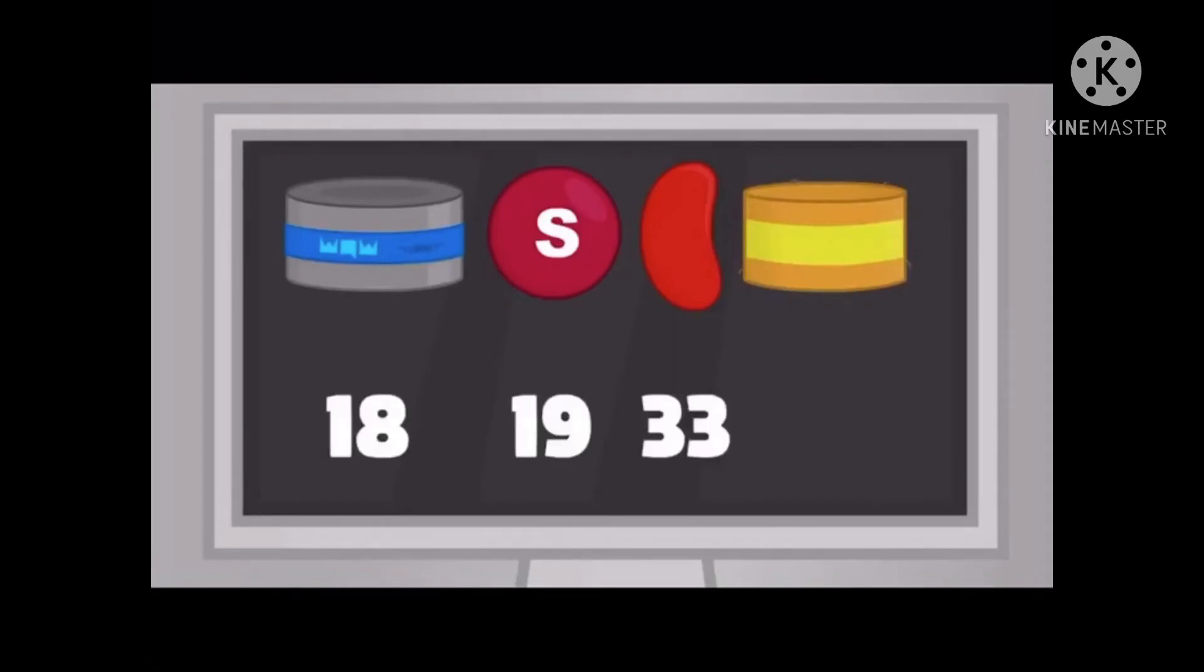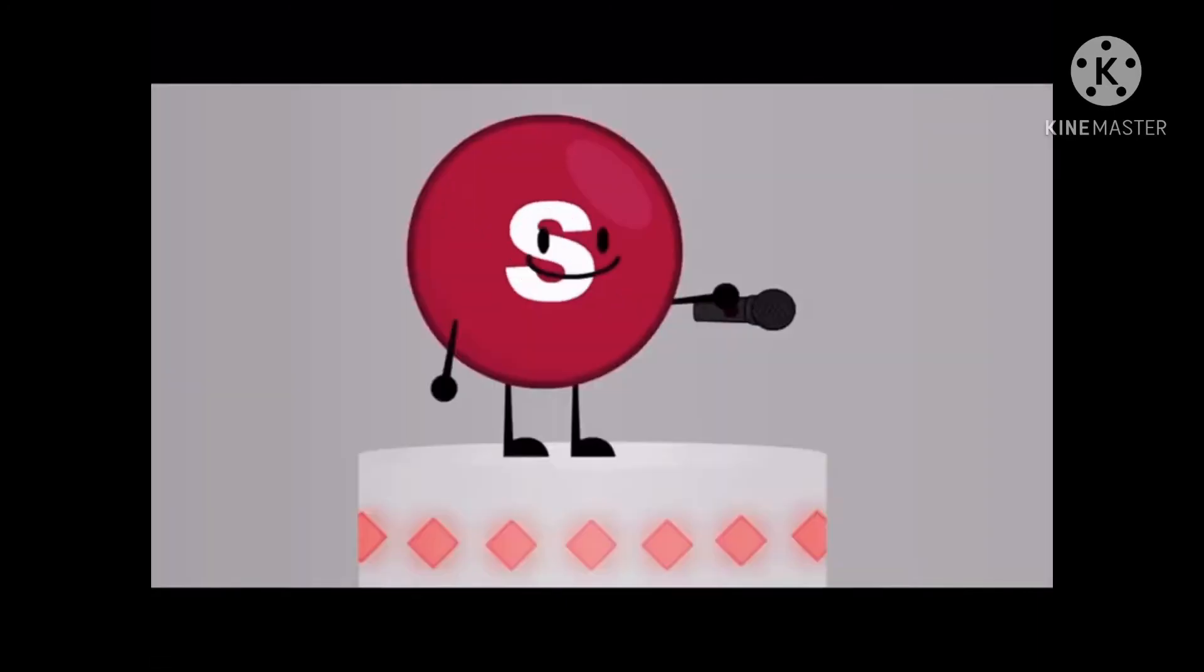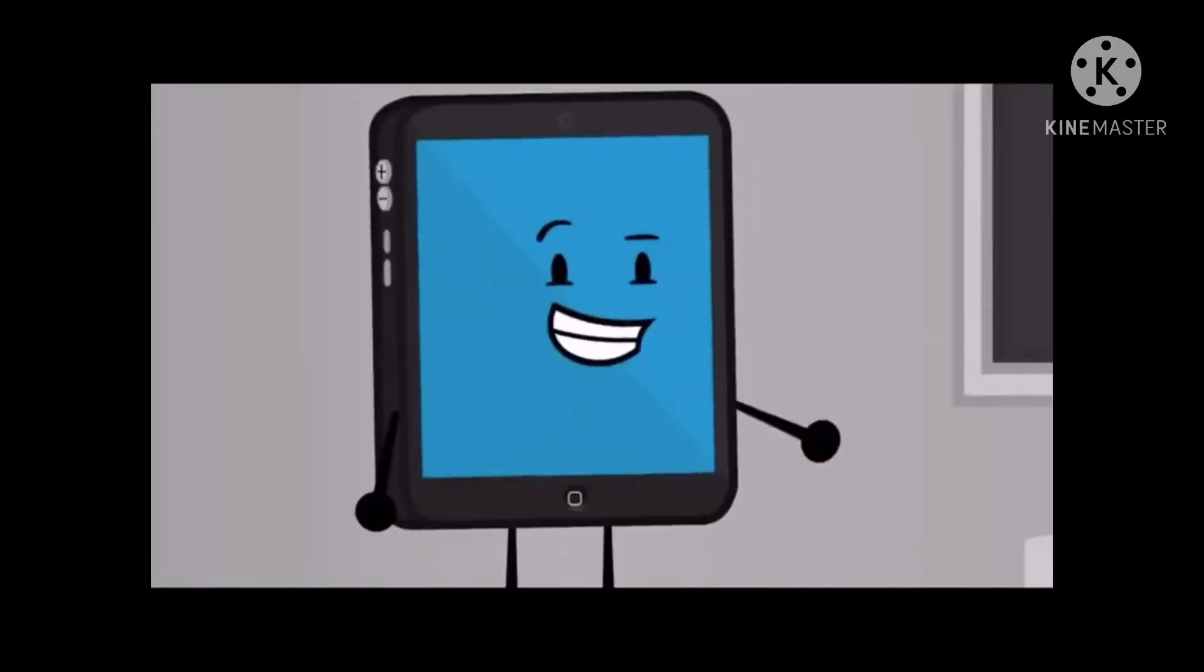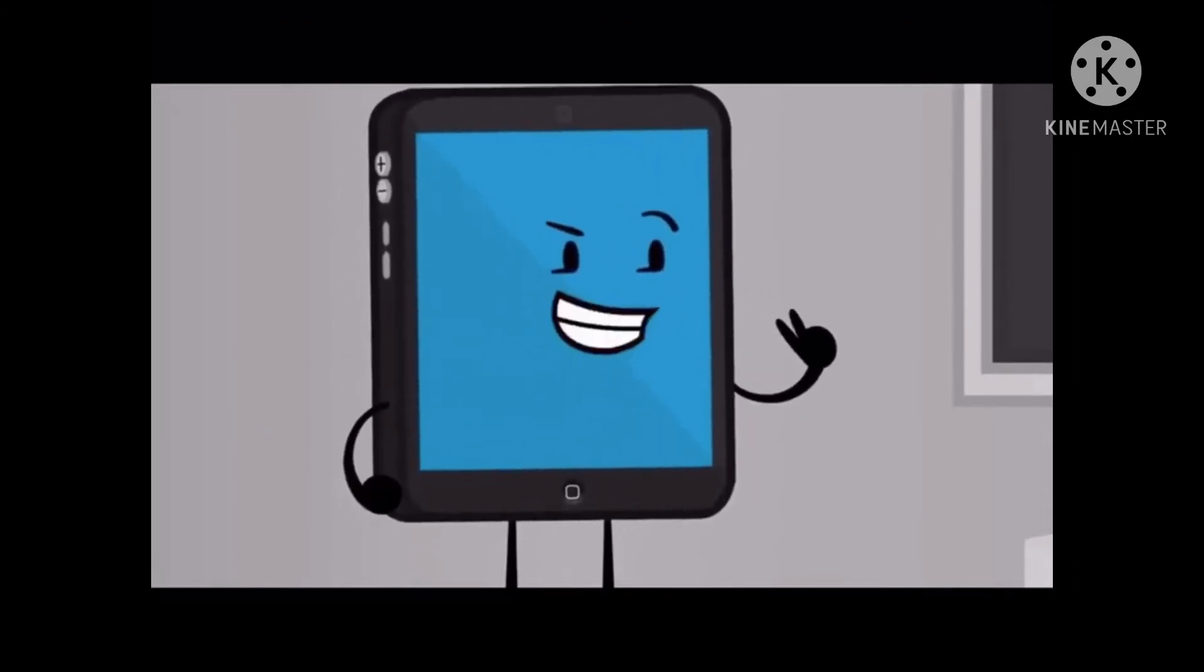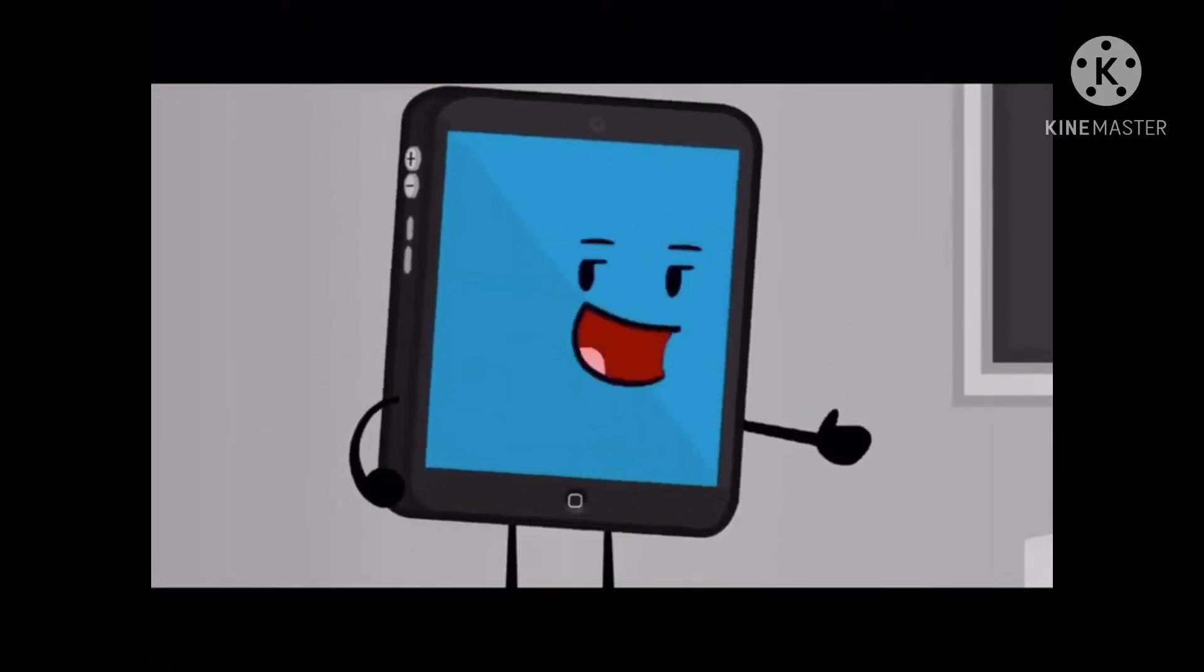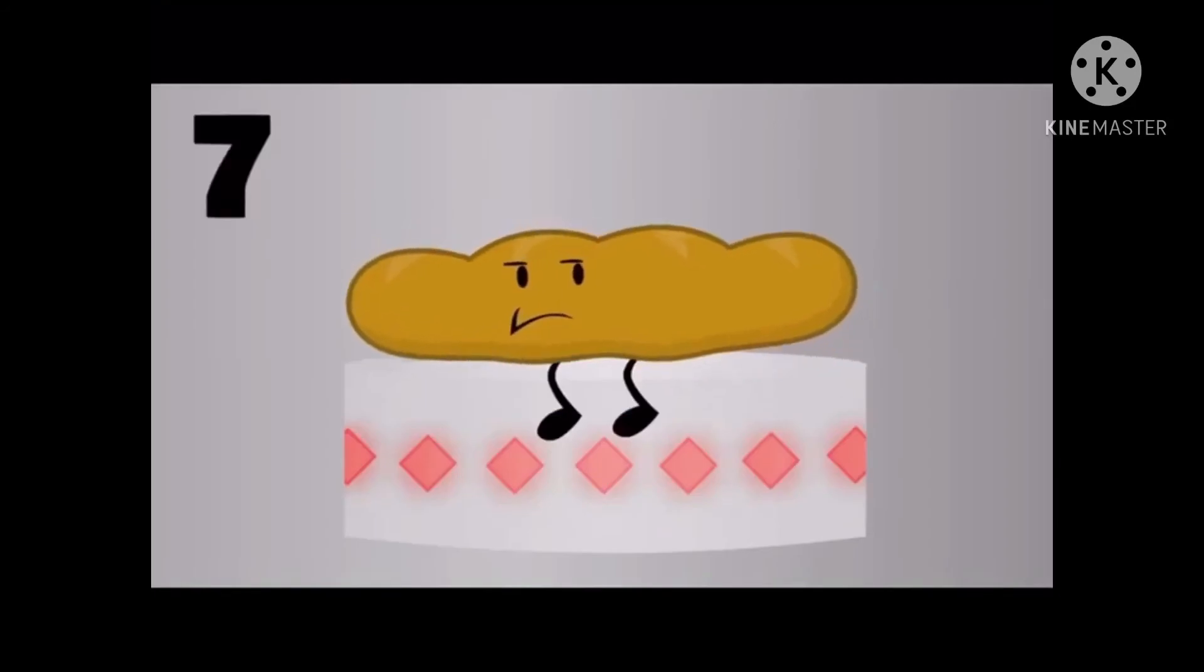Now let's see the dislikes. The first safe are WoW, Skittle, Jellybean, and Elastic Band, with 18, 19, 33, and 43 votes. Now we're on the bottom four. As you know, this is a double elimination, so only two of you are safe. The next contestant safe is Bread, with 77 votes.